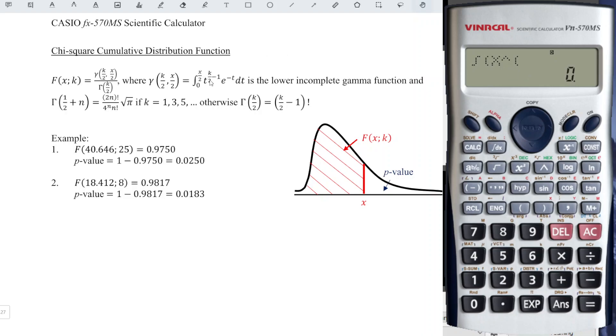And followed by k over 2 minus 1. k is the degree of freedom. For this case, it's 25 over 2 minus 1. Close bracket. And we times shift ln to get e to the power. We can put bracket before negative x. Close bracket. Followed by comma.